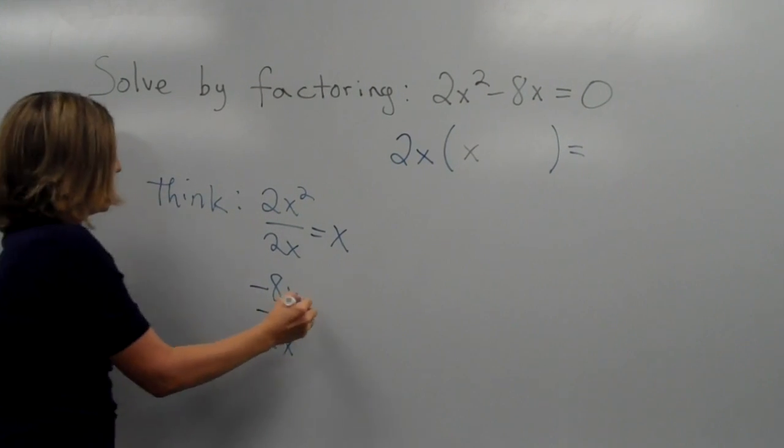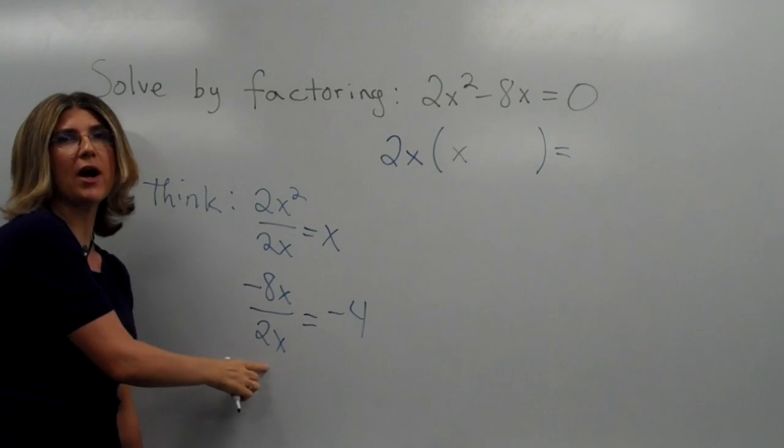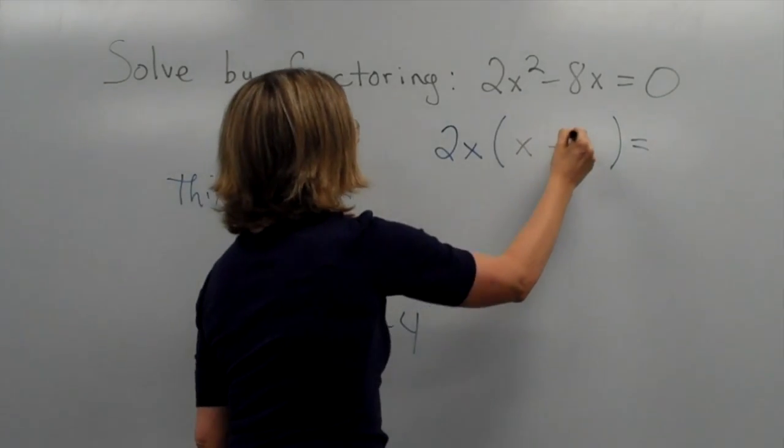Minus 8 over 2 is minus 4. And as long as x is not 0, x over x is equal to 1. So we get minus 4.